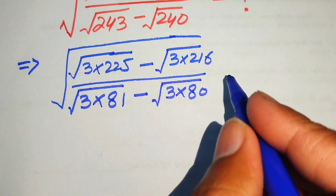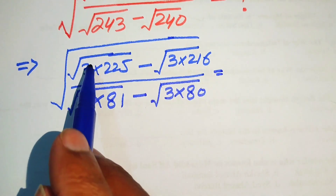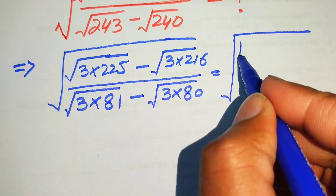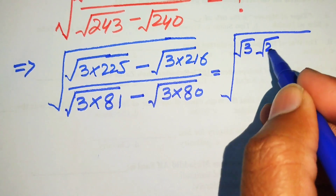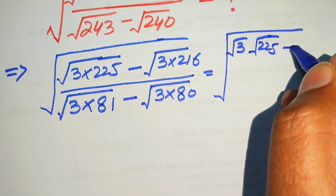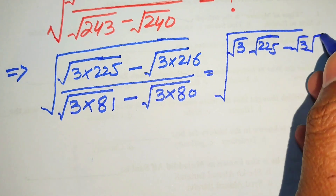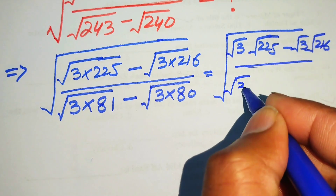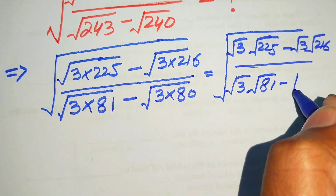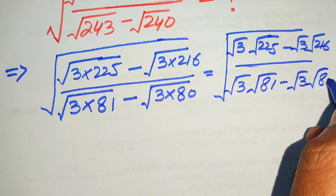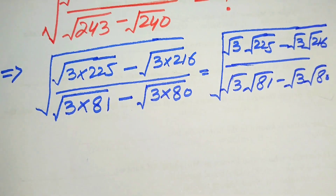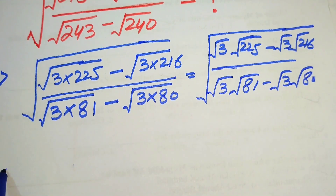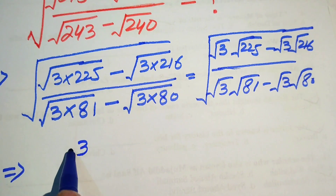After this step we apply the radical law, separating the radical sign on all terms individually. So we write: square root of 3 times square root of 225, minus square root of 3 times square root of 216, divided by square root of 3 times square root of 81, minus square root of 3 times square root of 80. In the numerator, square root of 3 is the common term.